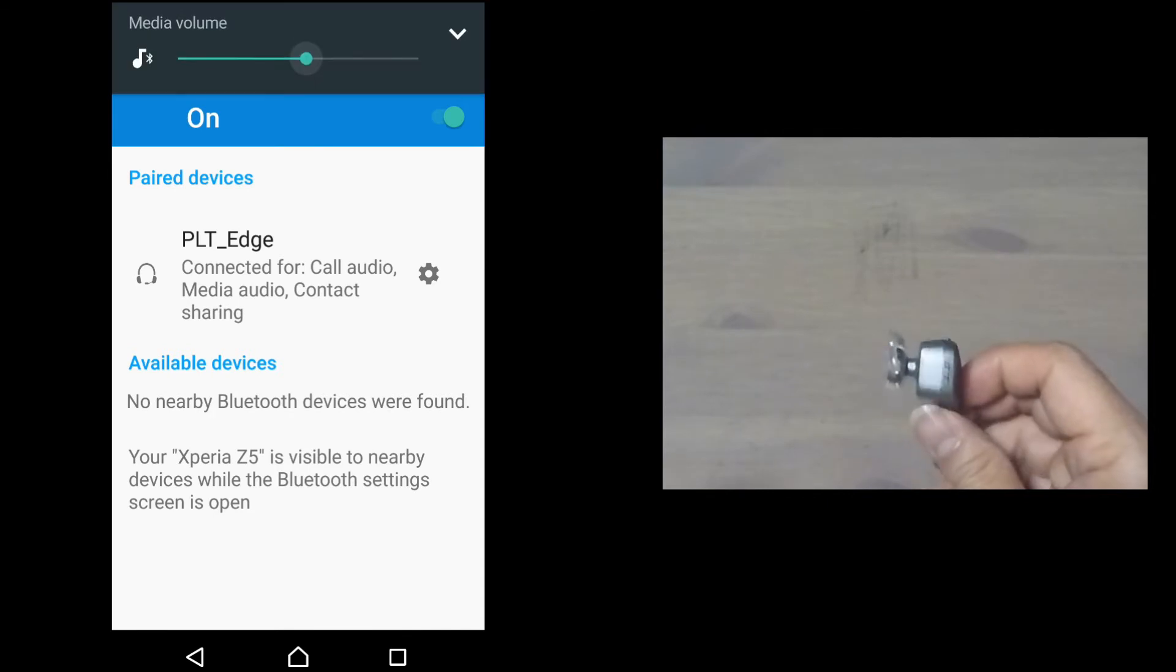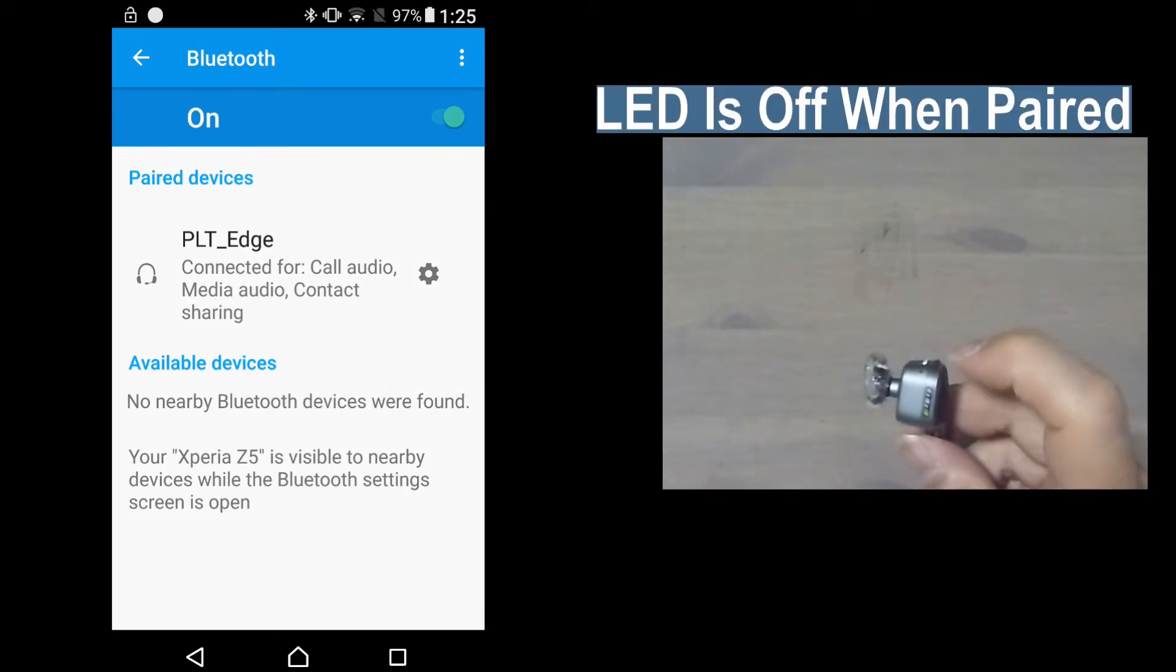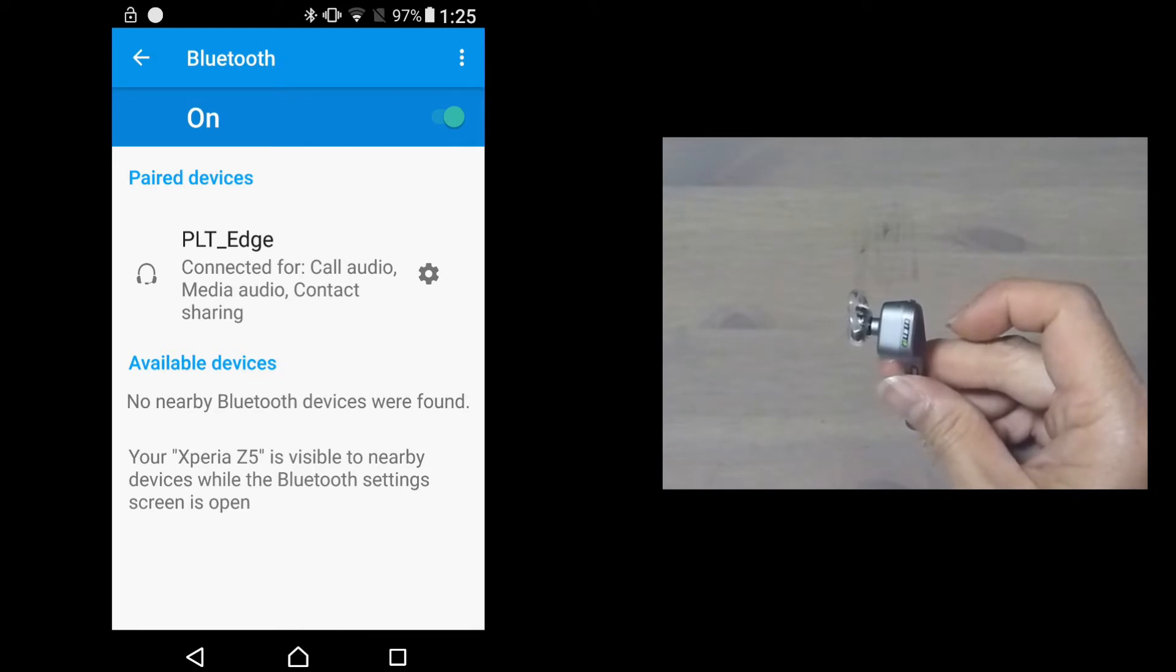And you can see that once it's paired, it's no longer blinking blue and red. The LED has now gone off, indicating that it has paired with our mobile phone. As you can see, it is that simple to pair this device to your mobile phone.